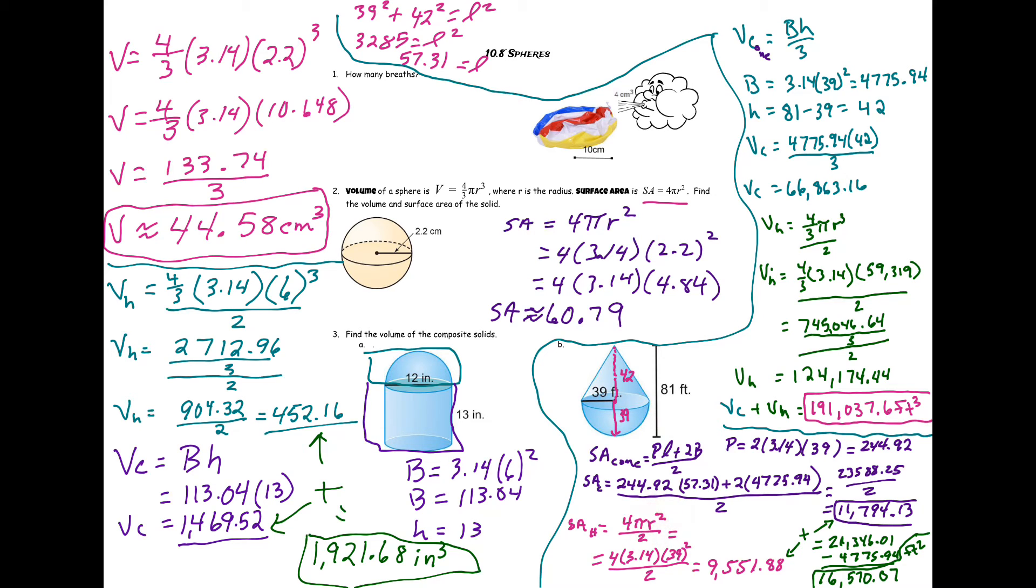So when I do it, I get 9,551.88. And then to find my total surface area, I add these two things together, which gives me 21,346.01. And then you have to subtract off the bases. And this is where it gets interesting with the hemisphere.